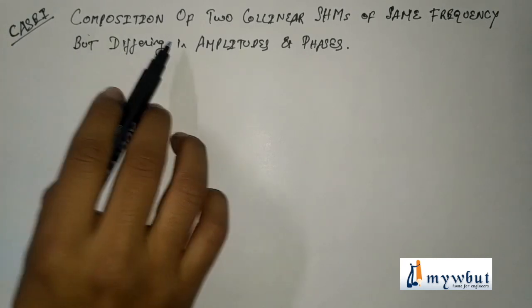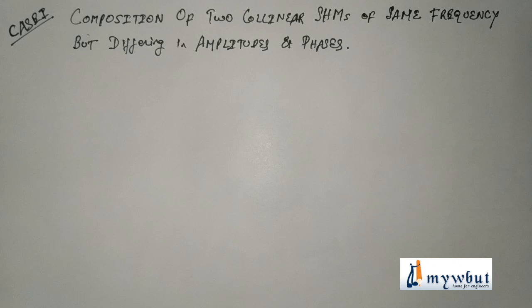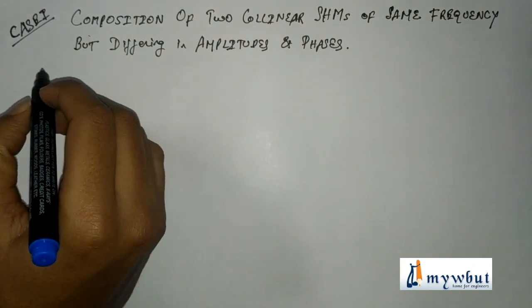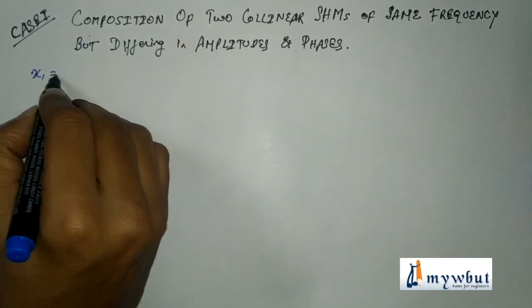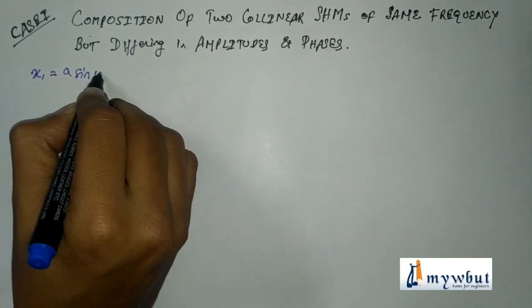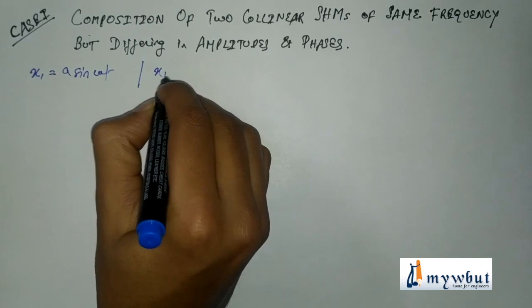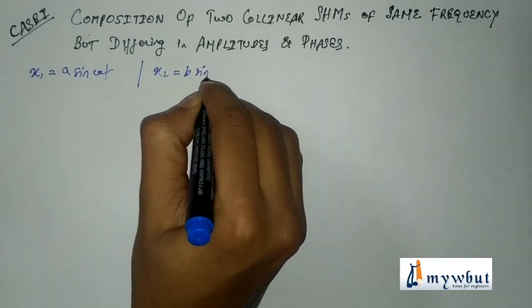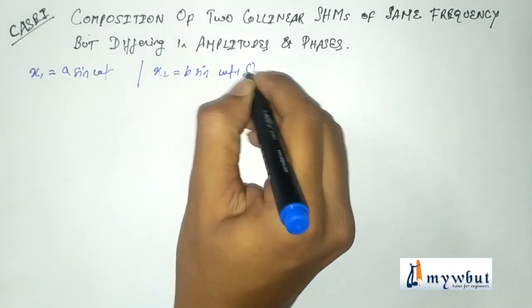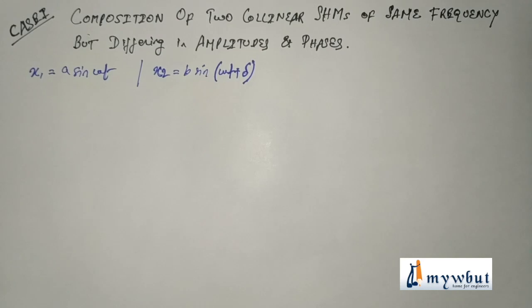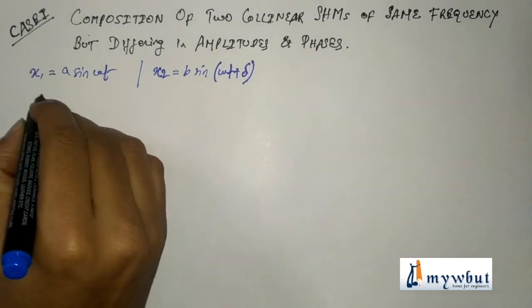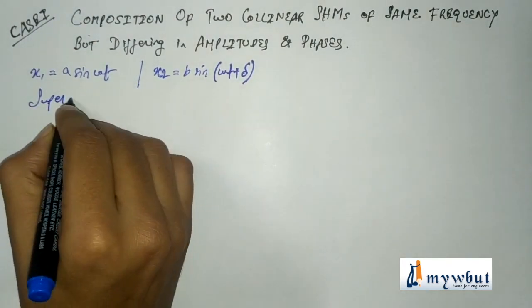Case one: we will be considering the composition of two collinear simple harmonic motions of the same frequency but differing in amplitudes and phases. Consider two collinear simple harmonic motions represented as x₁ = a sin(ωt) and x₂ = b sin(ωt + δ). Here a and b are the respective amplitudes and δ is the phase difference or epoch between the two simple harmonic motions. According to the principle of superposition,